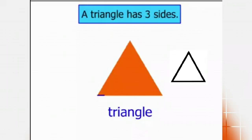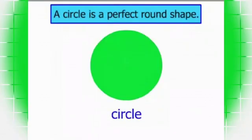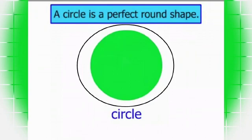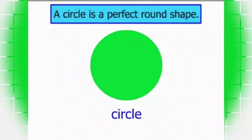Now what shape is this? This is a circle. A circle is a perfect round shape. Now what shape is this? It's a circle.